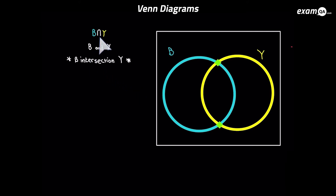We've got B with a little ∩ sign and then Y. The actual name for this is B intersection Y — I just call it 'B and Y' — and what it means is where is it both B and Y at the same time? We need to find a space where it's both B and Y, and of course it's the bit in the middle.